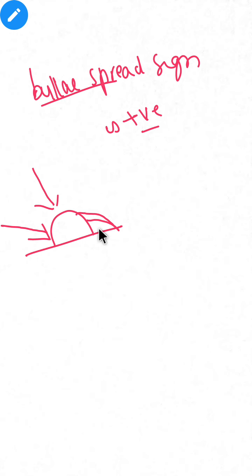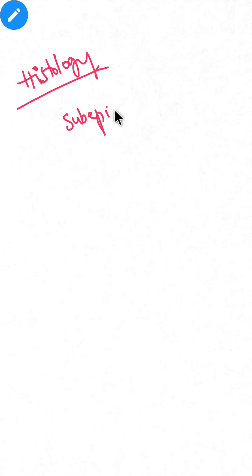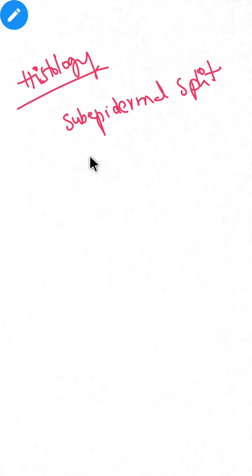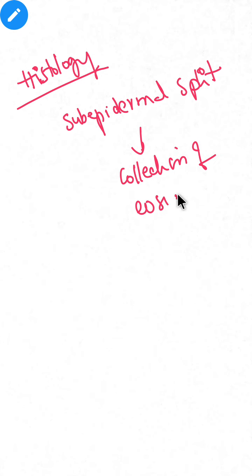Regarding investigations, on histology sub-epidermal splits will be seen. There is also a collection of eosinophils within this split. These are the key histological findings in bullous pemphigoid.